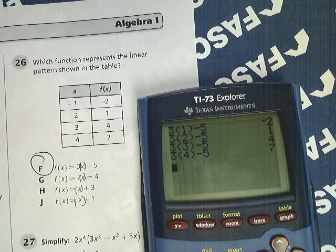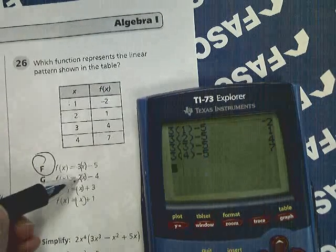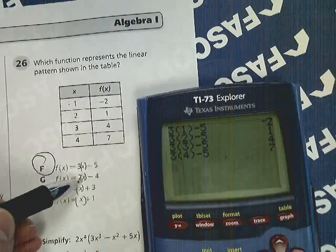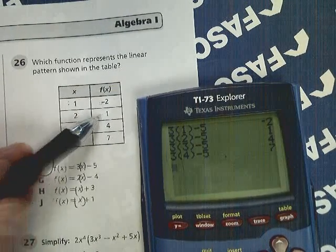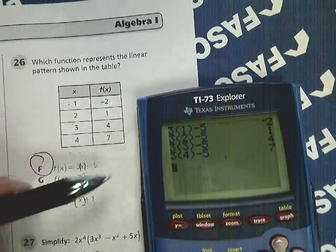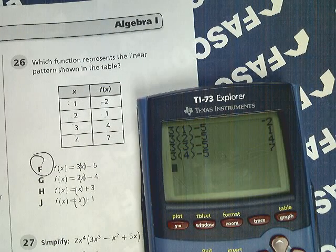If it hadn't worked, I would have gone down to 2x minus 4 and plugged in 1 for x, so 2 times 1 minus 4, and see if it would give me this answer. Then try 2 and look for 3. It's a pretty simple system to get the answer.